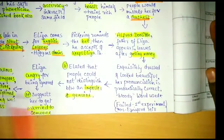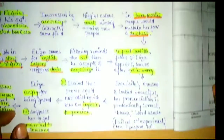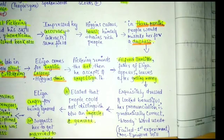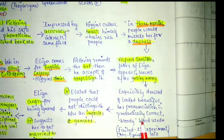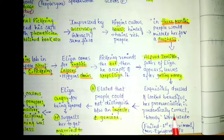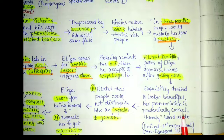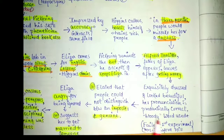Eliza was given proper training; she was exquisitely dressed and looked very beautiful. Her pronunciation was made phonetically correct. Till here nobody could make out that she was not a duchess or not from the elite community.